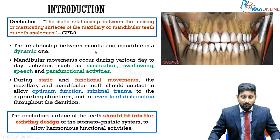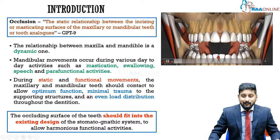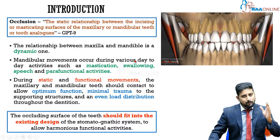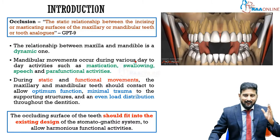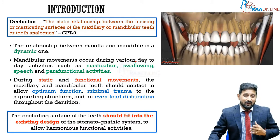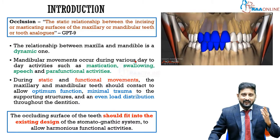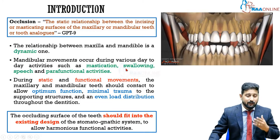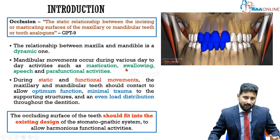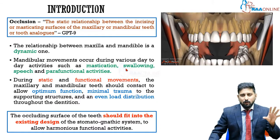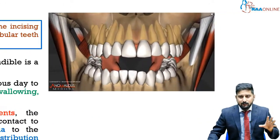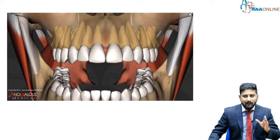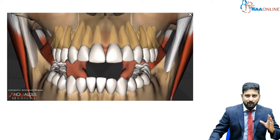Even though occlusion is defined as static, the maxilla-mandibular relationship is actually dynamic because the mandible is a movable bone — it moves in multiple directions against the maxilla to perform activities such as mastication, swallowing, speech, and even parafunctional activities.